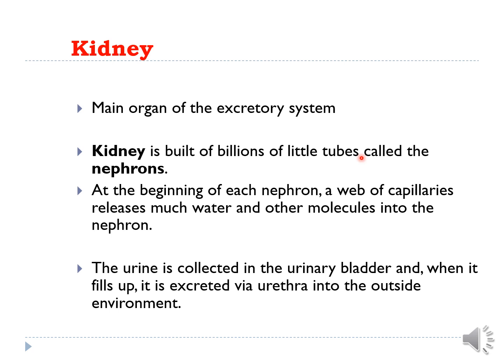At the beginning of each nephron, a web of capillaries releases much water and other molecules into the nephron. Urine is collected in the urinary bladder, and when it fills up, it is excreted via the urethra into the outside environment.